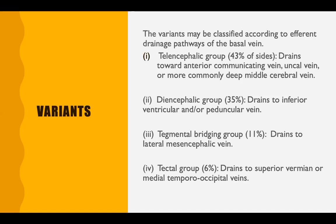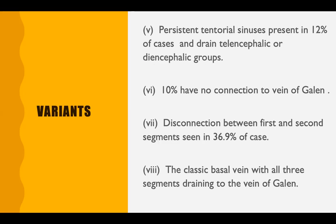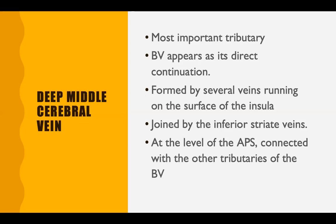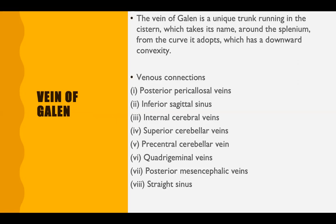There are many variants of the basal vein classified according to efferent pathways. In 43%, it is the telencephalic group, draining mainly via the anterior communicating or uncal veins. The diencephalic group drains via the inferior ventricular and peduncular veins (second segment). The tegmental bridging group is seen in about 11%. The tectal group drains directly into posterior infratentorial veins such as the superior vermian or medial temporooccipital veins. Persistent temporal sinuses are present in 12% of cases. In 10% of patients, the basal vein has no connection with the vein of Galen. Disconnection between the first and second segments is seen in ~37% of cases. The deep middle cerebral vein, sometimes considered a continuation of the basal vein, is formed on the surface of the insula and joined by inferior striate veins.